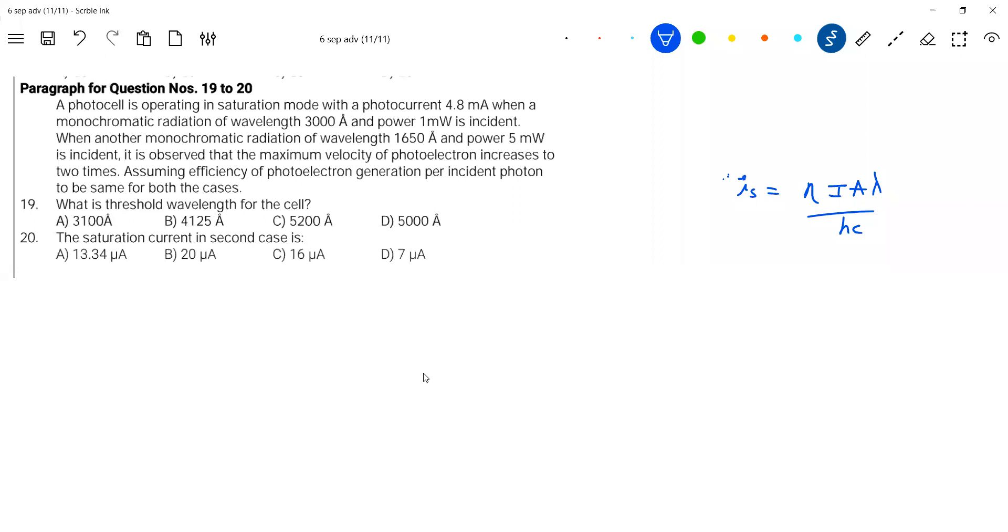Efficiency and saturation current of 4.8 milliampere given. Power is given. Then energy of the photon, so from power this will become intensity. In terms of power, you can bring it.